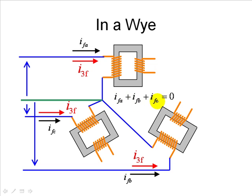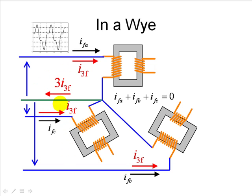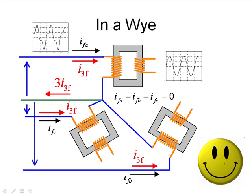When we add the 60 Hz fundamentals together, we get zero — so there is no 60 Hz magnetization current returning through the neutral wire back to the center of the sources. However, when we add the triple frequency components of phases A, B, and C, they are all in phase and have the same magnitude, so they do not cancel. They add up to three times the value of one of those currents. We therefore have 180 Hz currents flowing through the primary network — and that is not something we can ignore.